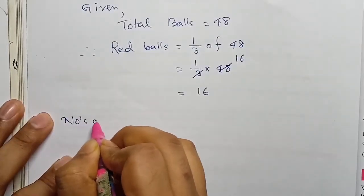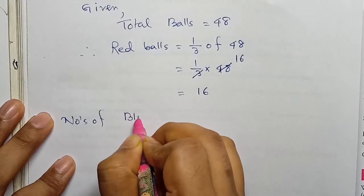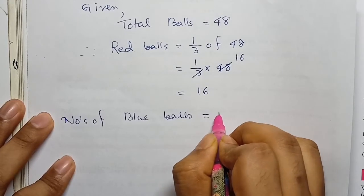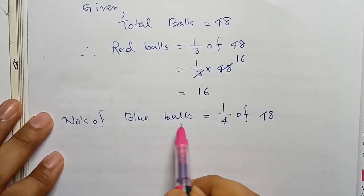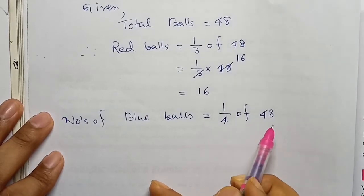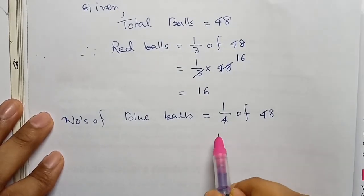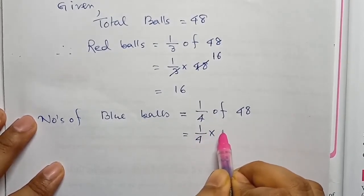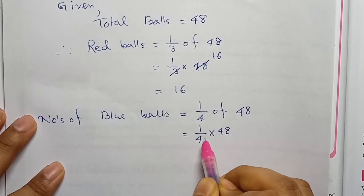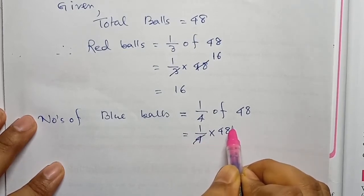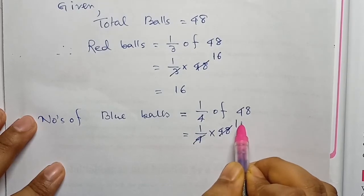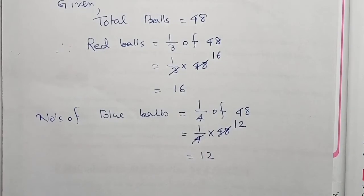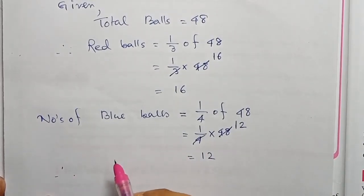Number of blue balls = 1/4 of total balls = 1/4 × 48. Cancelling 4 with 48 gives 12. So the total number of blue balls is 12.